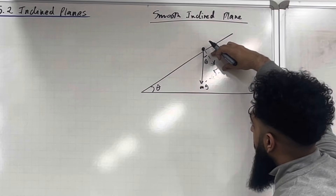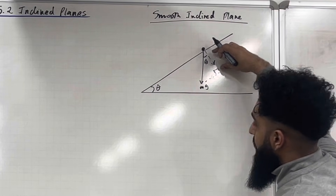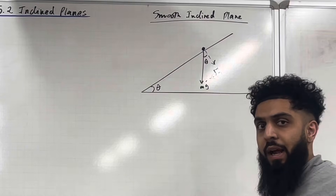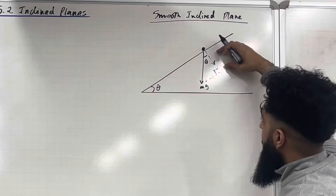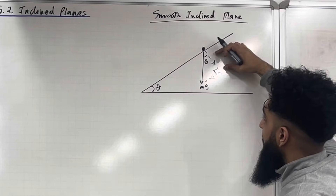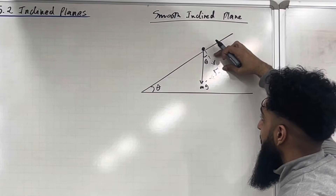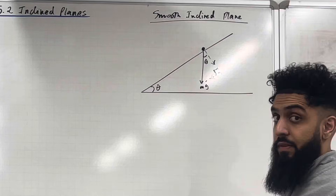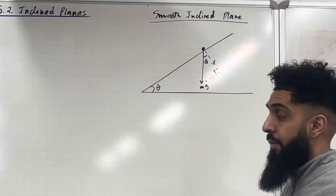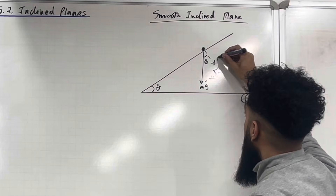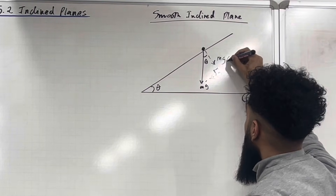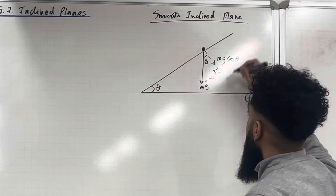So what is this component force? Well, if you look at the right-angle triangle, this here represents the adjacent. The adjacent is always of the form cosine, so in particular it will be mg cos theta.